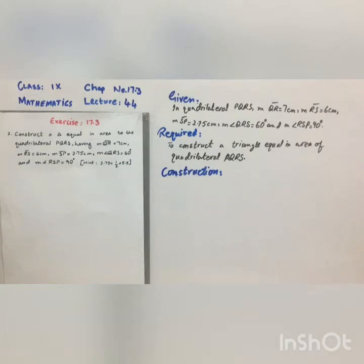Assalamu alaikum, Class 9th, Exercise number 17.3, Question number 2. In this question we have to construct a triangle equal in area to the quadrilateral PQRS in which measurement QR is equal to 7 centimeters, measurement RS is equal to 6 centimeters, measurement SP is equal to 2.75 centimeters, approximately 2.8 centimeters, and measurement angle QRS is equal to 60 degrees, whereas angle RSP is equal to 90 degrees.